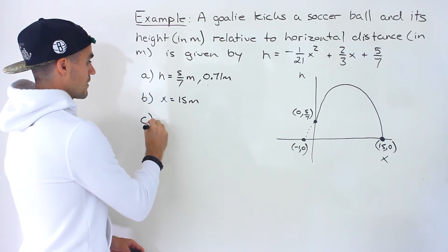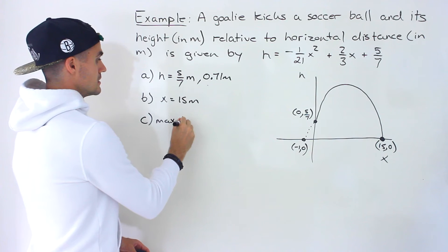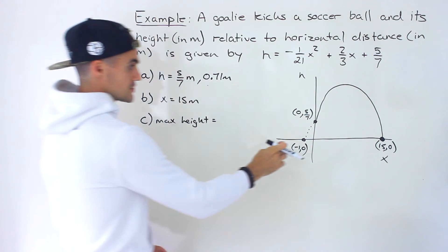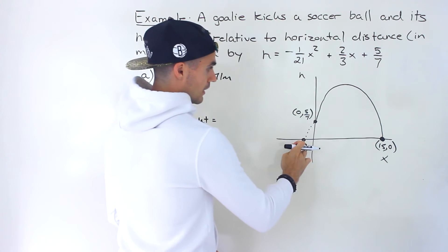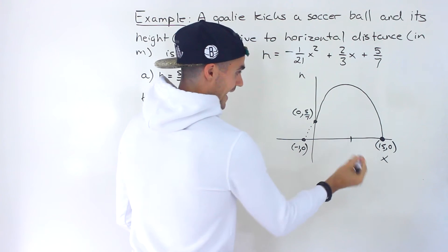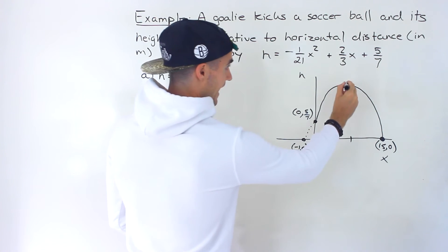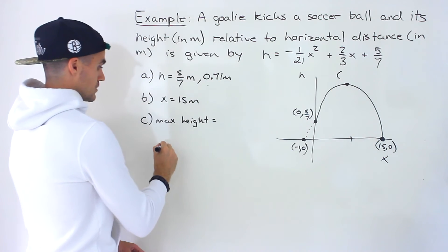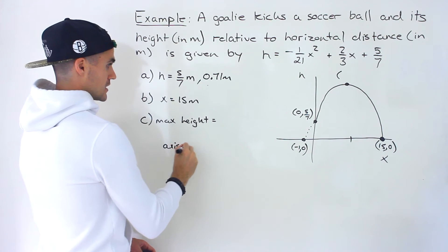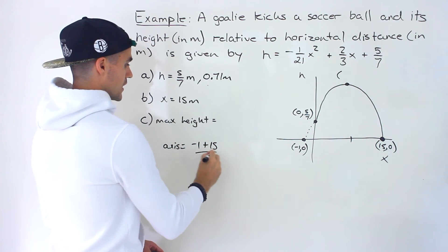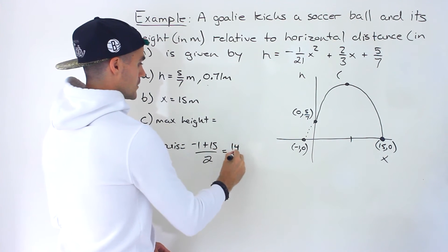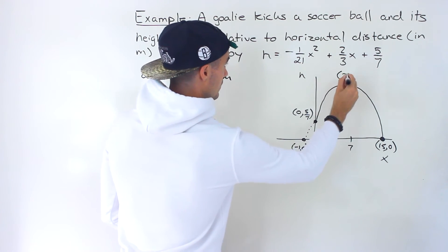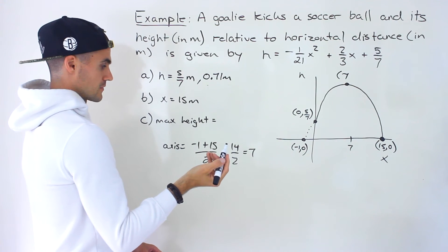In part C, they're asking for the max height of the ball. We now have both intercepts, so we can easily find the axis of symmetry, which is the x-value of the vertex — it's the midpoint between the intercepts. The axis of symmetry is negative 1 plus 15, divided by 2, which gives 14 over 2, which equals 7.